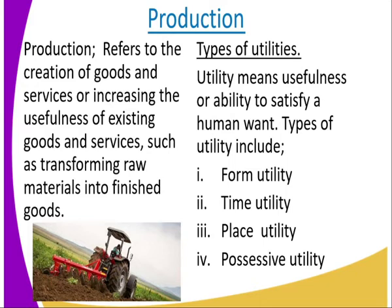That production, starting from the farm all the way to the final commodity that a consumer consumes, results in different utilities. That is the reason we are looking at the types of utilities. Utility means usefulness, or the ability of a commodity to satisfy a human want. The four types of utility are: form utility, time utility, place utility, and possessive utility.